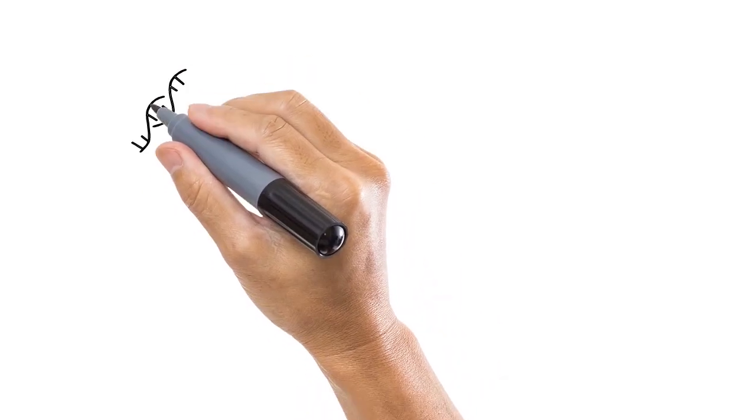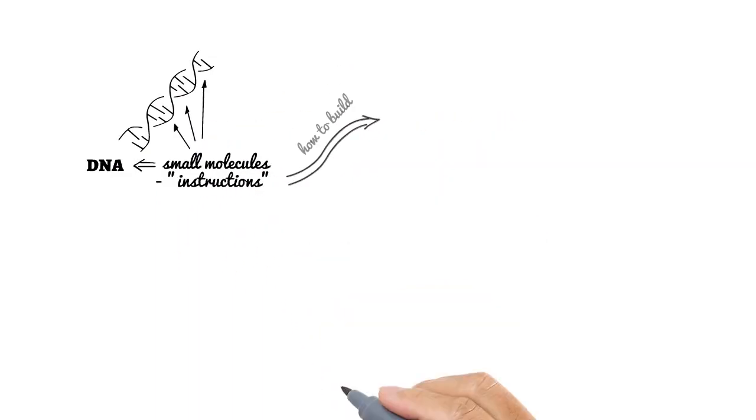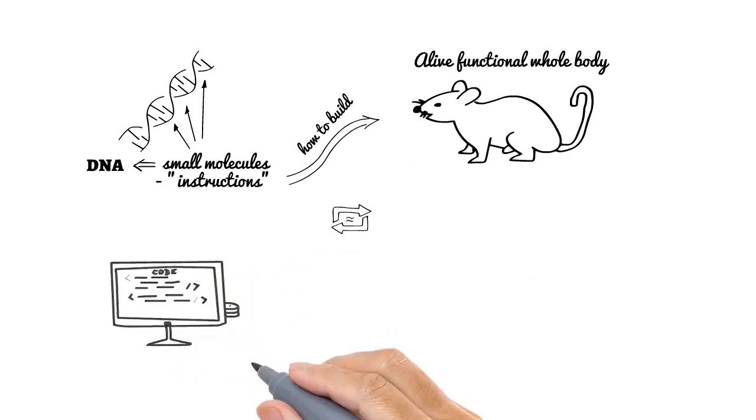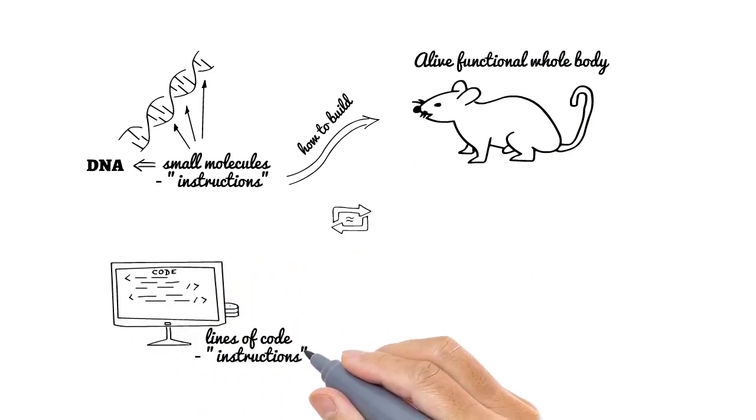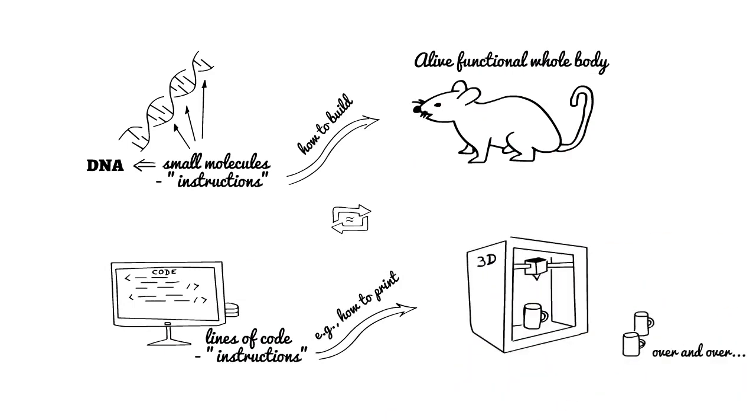Very, very oversimplified: DNA consists of small molecules inside our bodies and carries kind of instructions which allow to build the whole body and let it to be alive and functional. You can analogically compare DNA content with recorded million lines of software code with instructions, for example, to print the same objects on a 3D printer over and over. DNA of conditioned mice and their offspring was found to be different, changed, if compared with DNA of not conditioned mice.